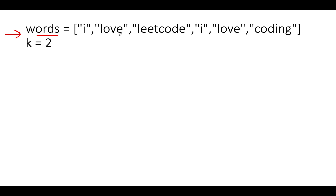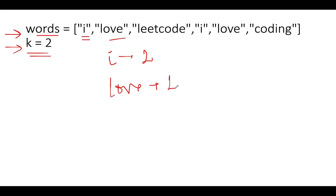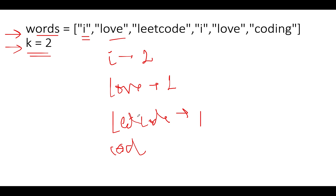The words are: i, love, leetcode, i, love, leetcode, coding, and k equals two — we need to return the top two elements by frequency. First, we create a map storing the frequency of each word: 'i' appears two times, 'love' two times, 'leetcode' two times, and 'coding' once. The map has four elements in total.